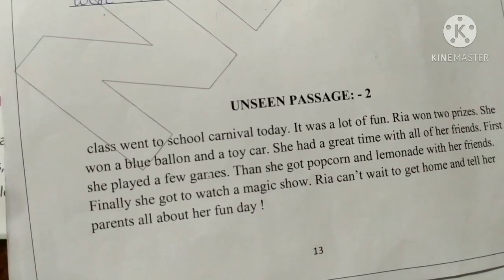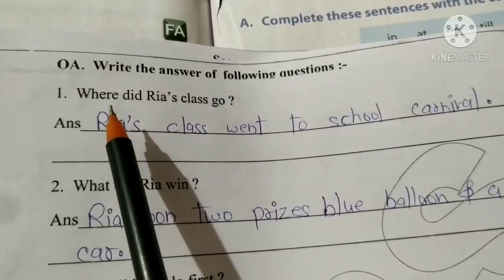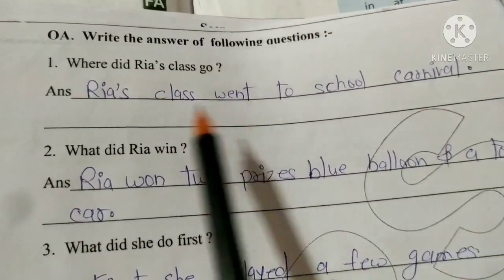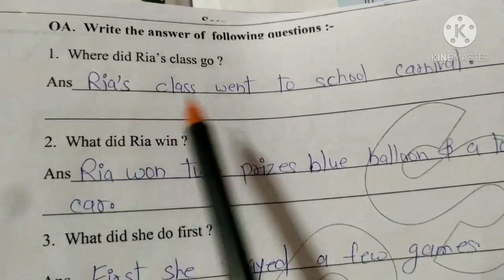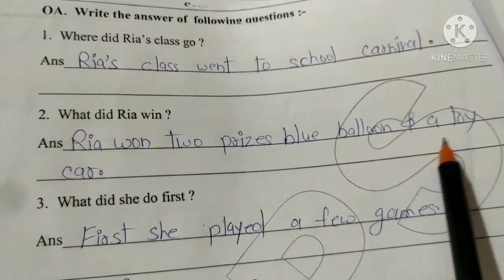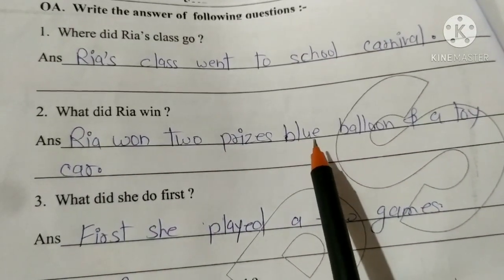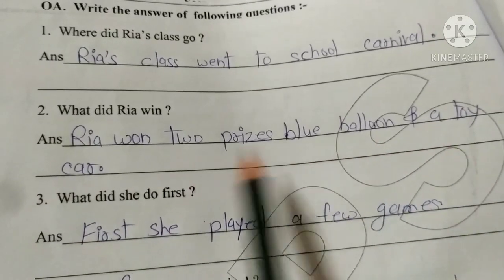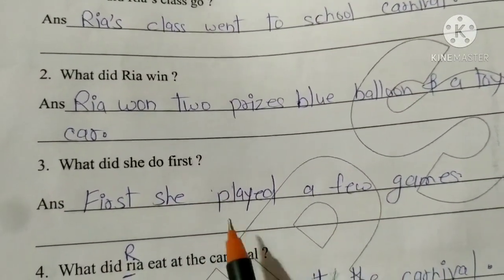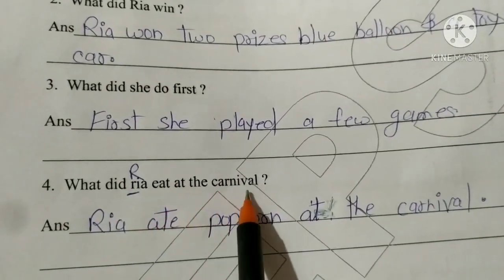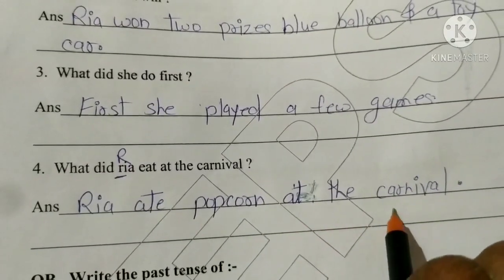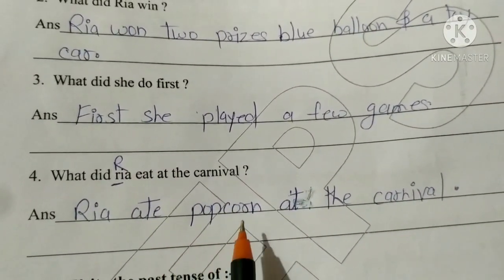Now we will check our homework of the unseen passage. Question one: Where did Riya's school go? Riya's school went to a school carnival. Question two: What did Riya win? Riya won two prizes — a blue balloon and a toy car. Question three: What did she do first? First she played some games. Question four: What did Riya eat at the carnival? Riya ate popcorn at the carnival.